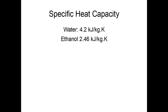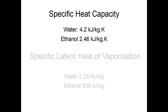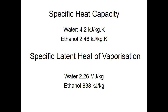Specific latent heat of vaporisation is less intuitive. It is the amount of energy required to change 1 kilogram of liquid to vapour without changing its temperature. For 1 kilogram of water at 100 degrees centigrade, it takes 2.26 megajoules to turn it into water vapour — that is 2260 seconds, or 37 minutes 40 seconds, with a 1 kilowatt heater.